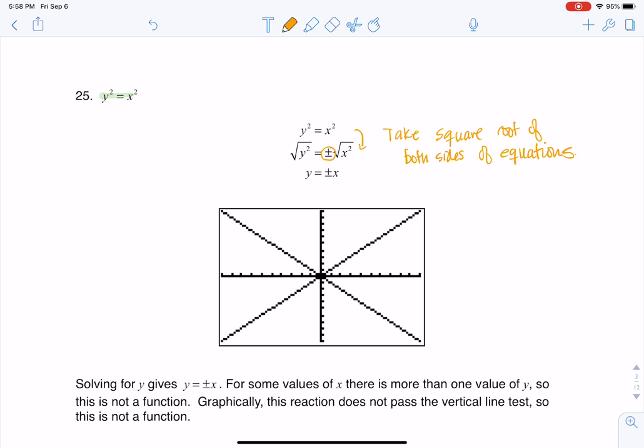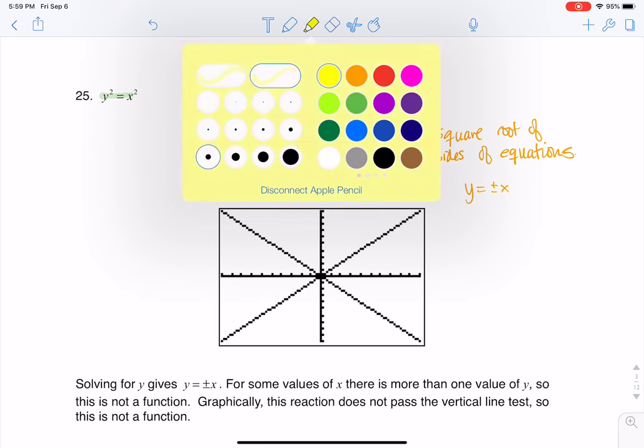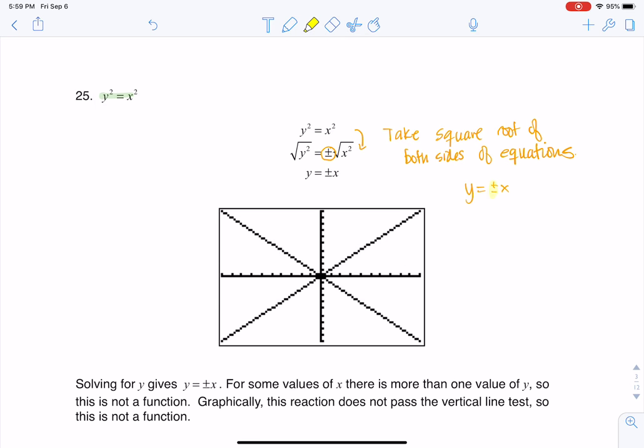So I get a lot of times where students will square root both of these sides, and then they'll just tell me y is equal to x, and that's incorrect because you technically need to say y is equal to plus or minus x. So be careful, this plus or minus becomes important.